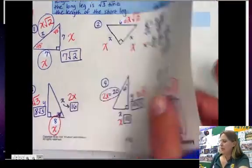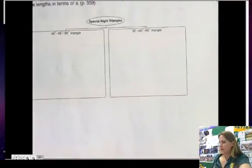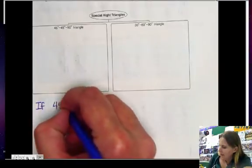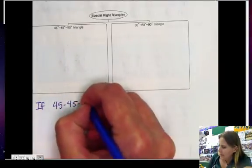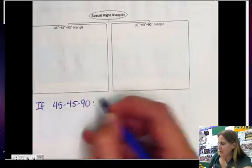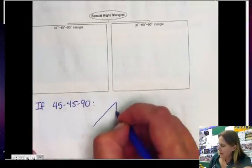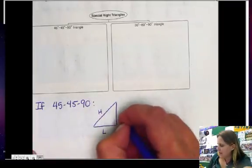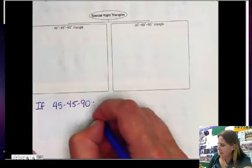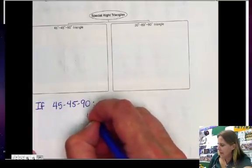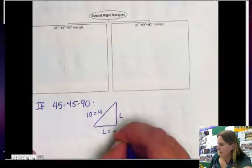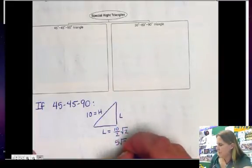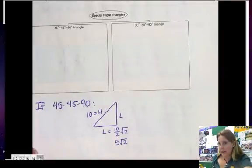So let's do, I want to show you a couple of tricks. If you are working with 45-45-90 triangles, and you want to find, if you're given the hypotenuse and you want to find the leg lengths, so if this equaled, let's say, 10, then the leg lengths is going to be half of 10 times square root 2, or 5 square root 2. That's the shortcut.